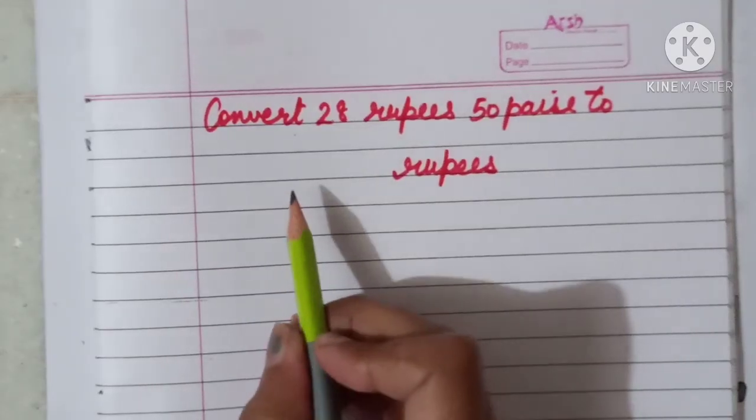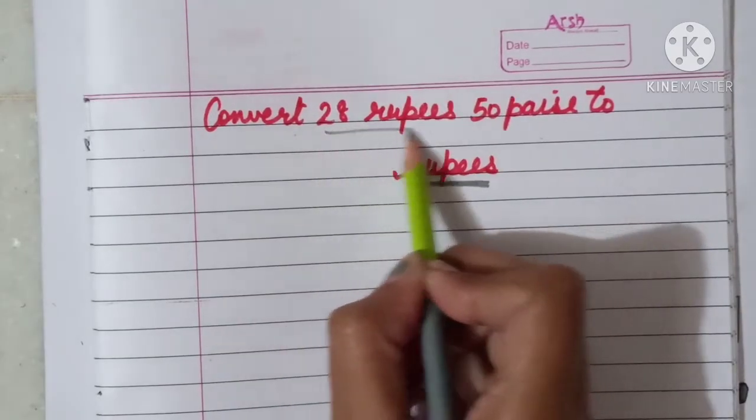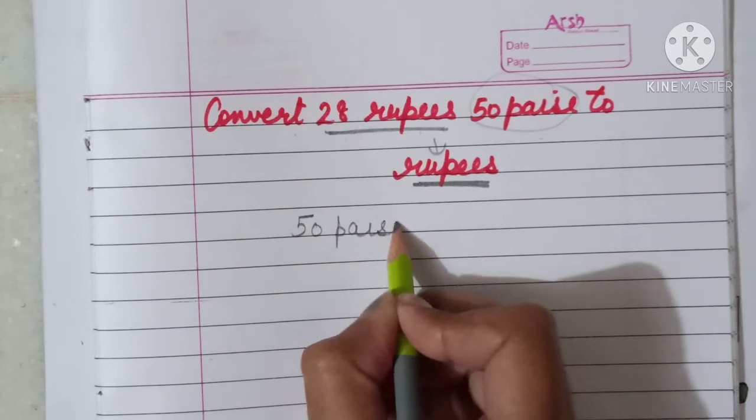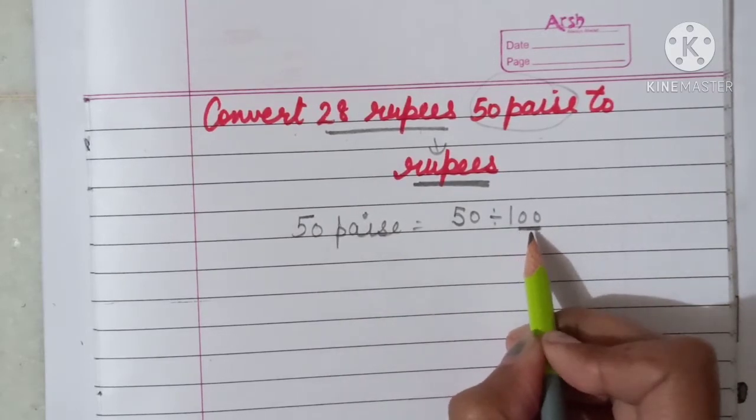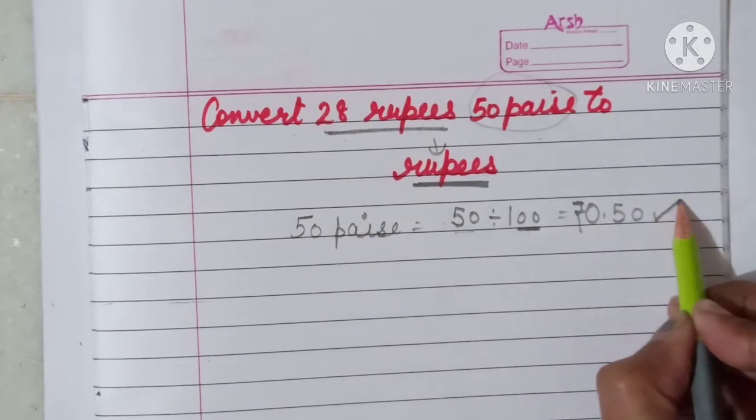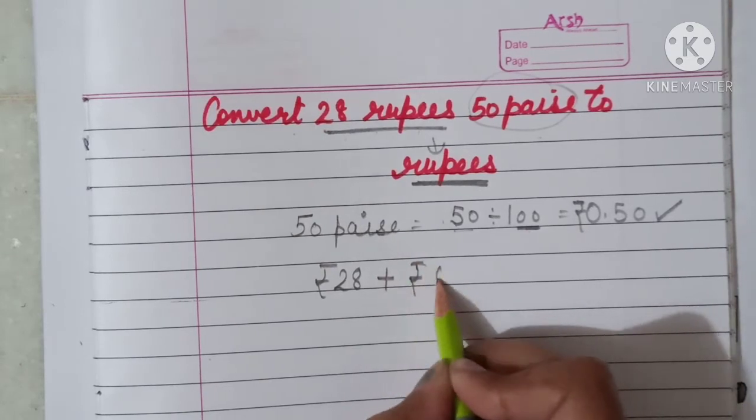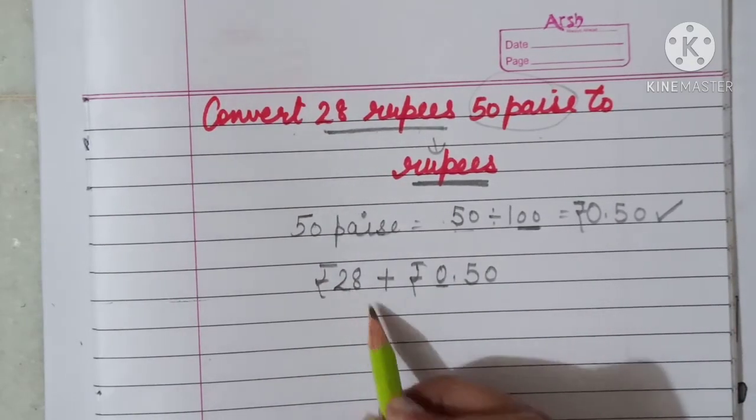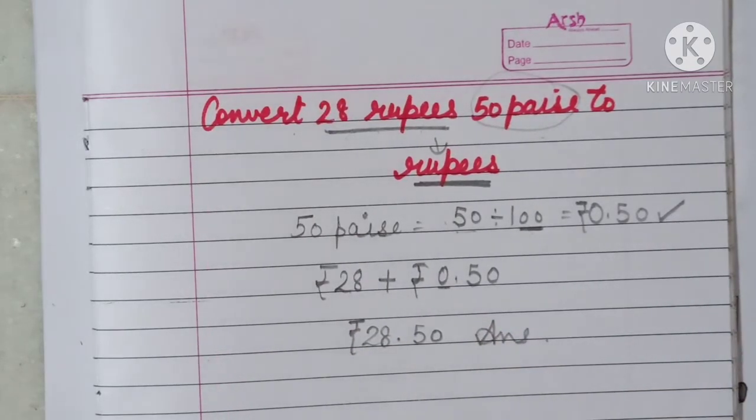Next example: convert 28 rupees 50 paise to rupees. Aapko rupees mein convert karna hai. So 28 rupees is already in rupees. 50 paise ko hum convert karenge. 50 paise se rupees mein convert karna hai, so we will divide. 50 divide 100. So point lagega. Two digits are there, so point 5 se pehle lagayenge, so 0.50. Aur humein kitne rupees given hain? 28 rupees. We will plus rupees 28 plus rupees 0.50. So here point se before 0 hai, aur yahan point se pehle 28 hai. So 28.50 will be your answer, rupees 28.50.